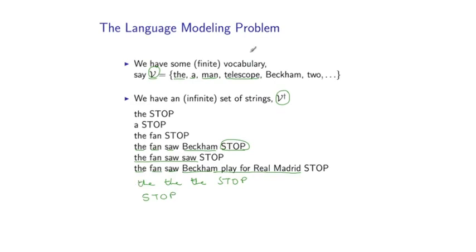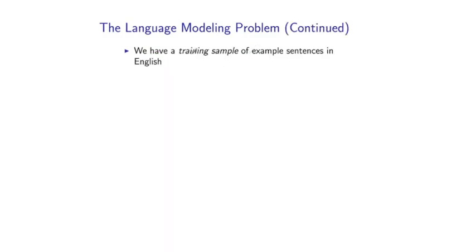So given these definitions, we can now define the language modeling problem. So I'm going to assume that we have a training sample of example sentences in the language we're interested in. Let's just assume that's English for now. So for example, you might collect all sentences that you've seen in the New York Times over the last 10 years. Or you might collect a very large set of example sentences from the World Wide Web. And you can think of many other examples.